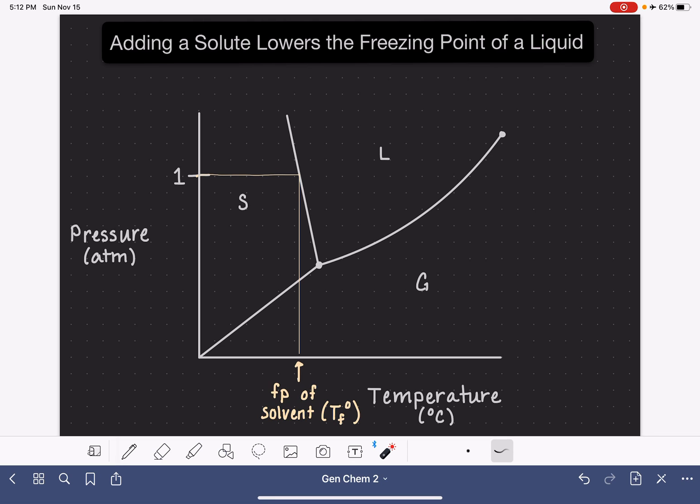Now, if we add a solute to this particular liquid, it will act not only to drop the liquid gas equilibrium line, but it's also going to drop the equilibrium line in between the solid state and the liquid state as well. So this line, just like we saw with the boiling point scenario, this line is going to be shifted away from the liquid portion of the phase diagram. Let's draw that new solid-liquid equilibrium line.